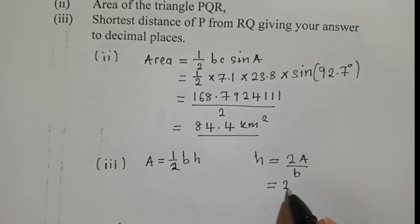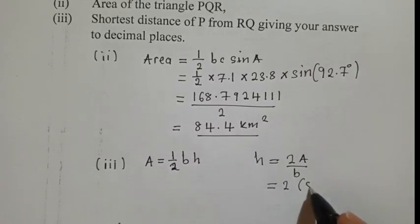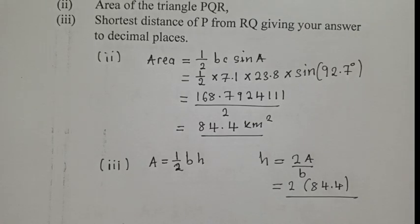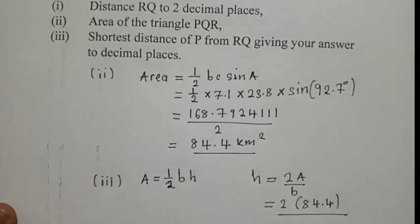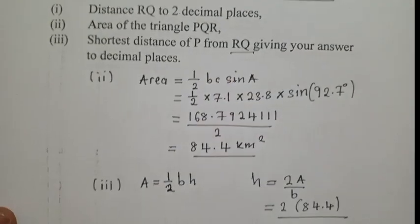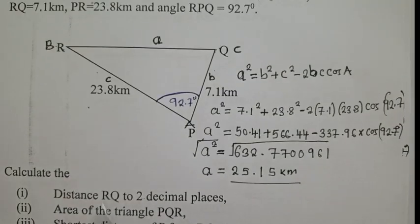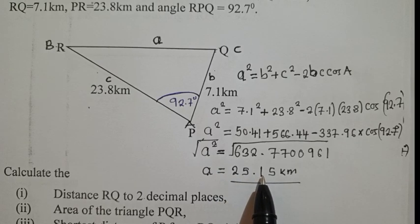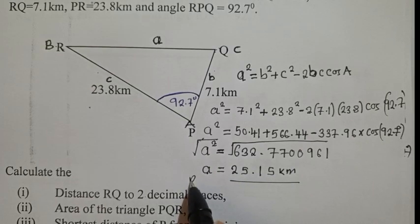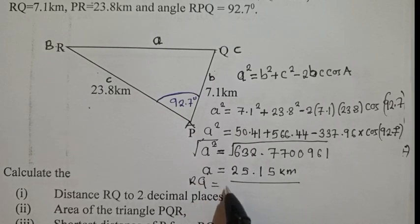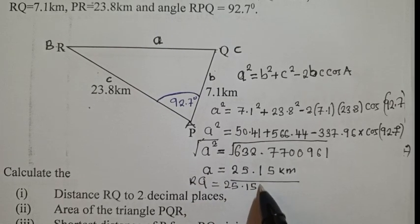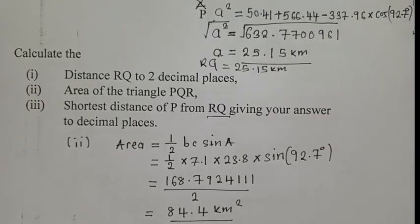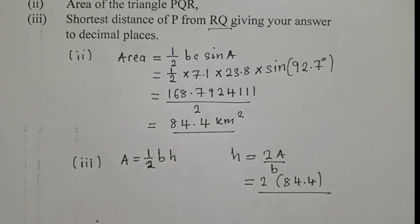So we are looking for H. We shall maintain it too. For A, it's the area which we've just found. This area. For B, it will be the side which has been mentioned here. They said RQ. So what is our RQ? Look at the diagram. Our RQ is a. This is what we are calculating. It's 25.15. And here, actually, we are supposed to indicate that this is our RQ, which is 25.15 kilometers. So for our B there, as usual, we'll put 25.15.